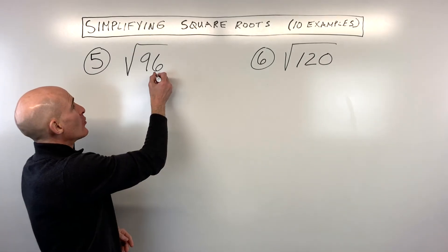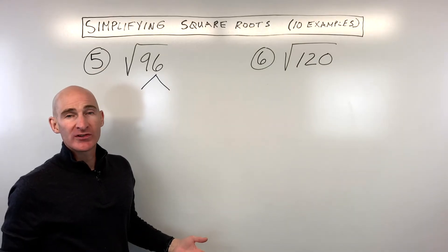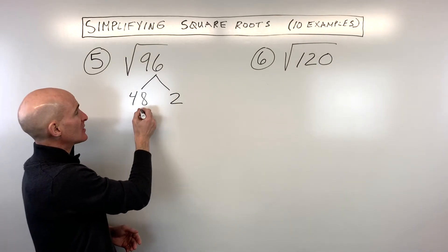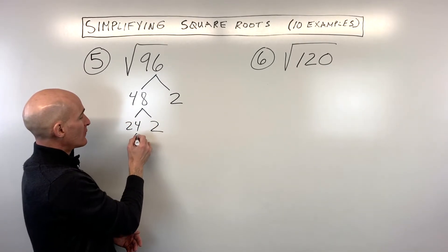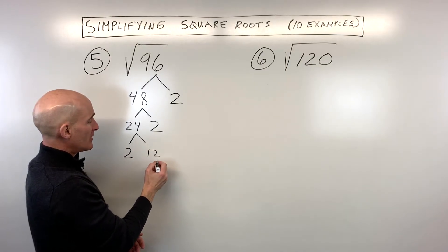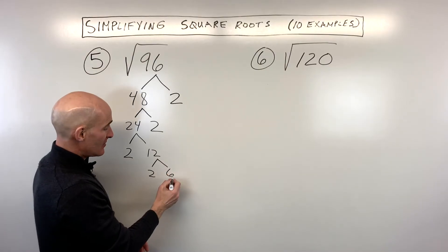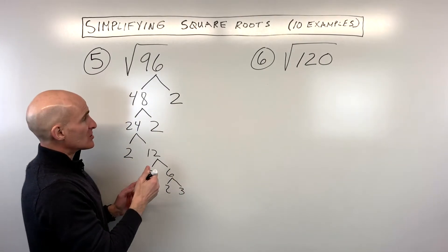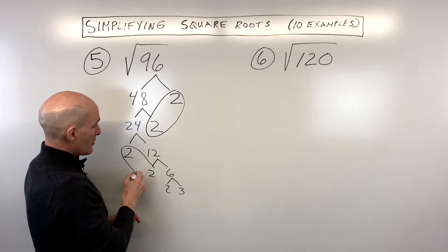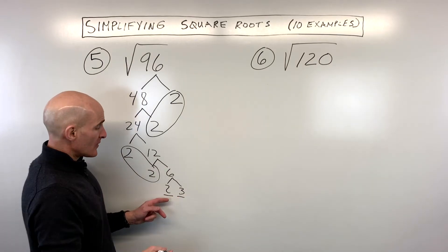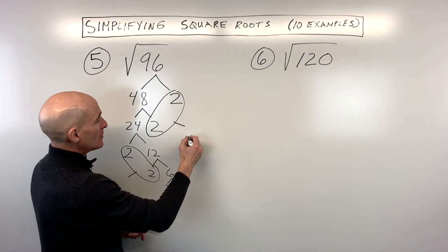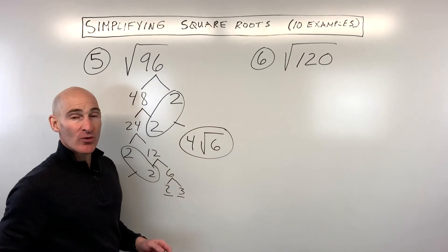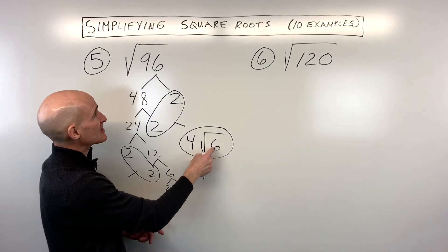For example 5, the square root of 96. Remember, if a number ends in an even digit — 0, 2, 4, 6, or 8 — you can always cut it in half by dividing by 2. So that's 2 times 48. 48 is even, so 2 times 24. 24 is even, so 2 times 12. 12 is even, so 2 times 6. And 6 is even, so 2 times 3. Now look at the ends of the branches and find pairs: a pair of 2s, another pair of 2s, with a 2 and a 3 left over. So we get 2 times 2, which is 4, and the leftovers multiply: 2 times 3 is 6 — giving us 4√6. Check: 4 squared is 16 times 6 gives back 96.